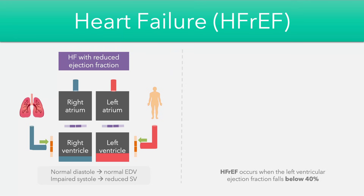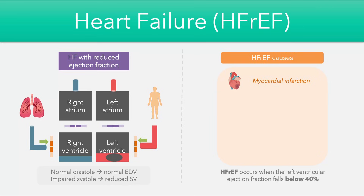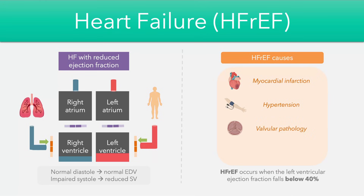This usually occurs when the left ventricular ejection fraction falls below 40%, and there can be several causes. In myocardial infarction or ischemic heart disease, an area of infarction can impair ventricular pumping. In hypertension, it's much harder for the ventricles to pump against a higher blood pressure. The same occurs in valvular pathology — for example, in aortic stenosis the left ventricle pumps against a stenotic valve, and in mitral regurgitation there's backflow into the left atrium, both reducing the stroke volume.